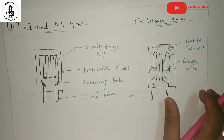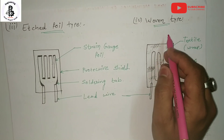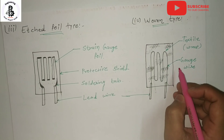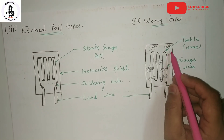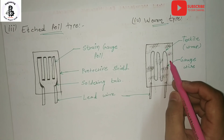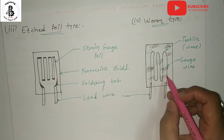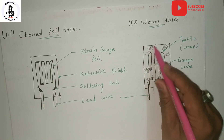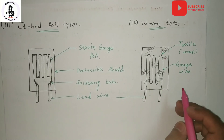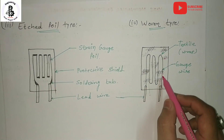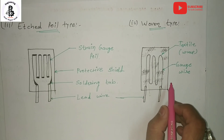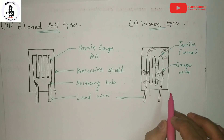The fourth type is the woven type strain gauge. In this type, Eureka wires are wound along with rayon wraps to form a woven type gauge, as shown in the figure. This gauge can measure large strains.